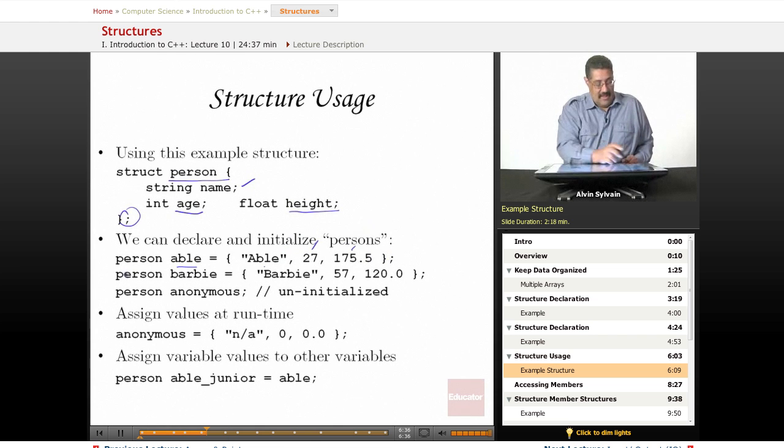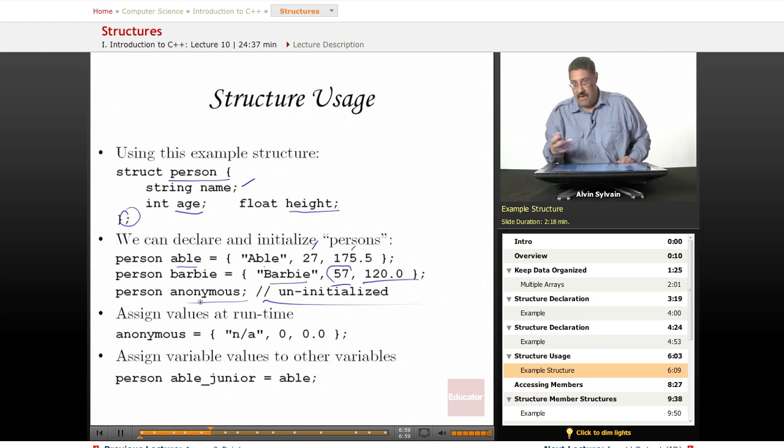Feet, that's pretty tall. Barbie, who is 57. Yes, Barbie doll, she's 57 centimeters tall, but she's only 12 inches is how high Barbie is. Well, this is a different Barbie. And then we have Anonymous. We did not initialize Anonymous for whatever reason.